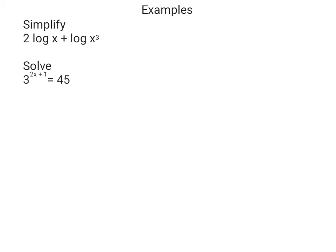Here are two examples. In the first one we've got to simplify. We can see we've got a case of using the power rule — it tells us we can bring the power to the front. So this becomes 2 log x plus, bringing the 3 to the front, 3 log x, and that's going to be 5 log x.